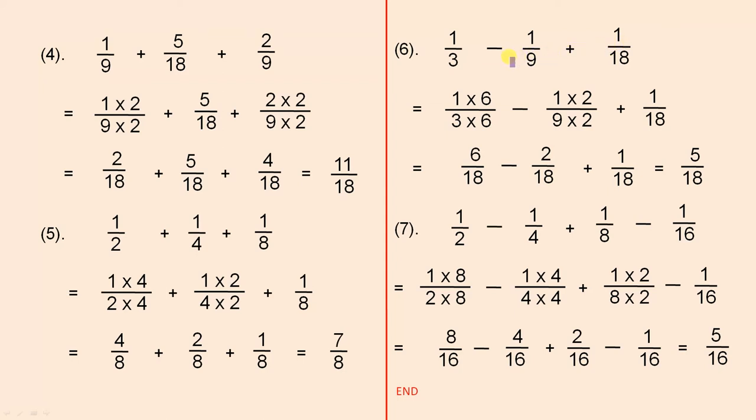Next example. This has to be multiplied by 6 to give us 18. That has to be multiplied by 2. So there's the working in the next line. That gives us 6 over 18 minus 2 over 18 plus 1 over 18. 6 minus 2 is 4. 4 plus 1 is 5. So it's 5 over 18.